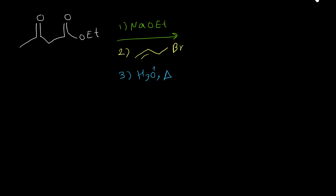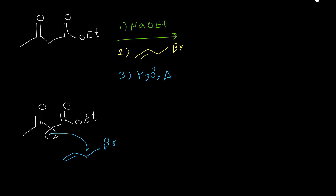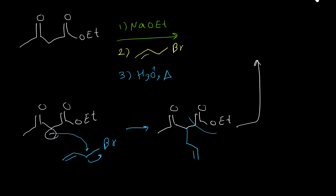Let's have some examples for this reaction. Here is the first reaction. In the first step, sodium ethoxide causes formation of the anion. Then in the second step, when we add the alkyl halide, the negative carbon expels the bromine. So we have the alkyl group on the alpha carbon. Then for the third step, when we hydrolyze the product, this ester group leaves our structure. So our final product is an acetone, and on the alpha carbon of acetone we have this alkyl group.